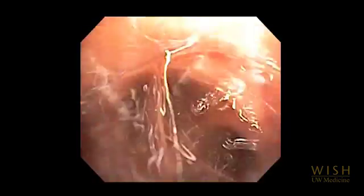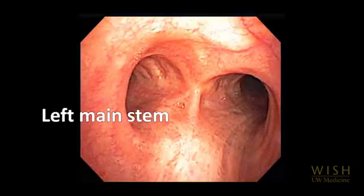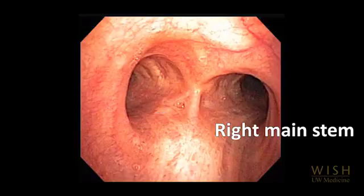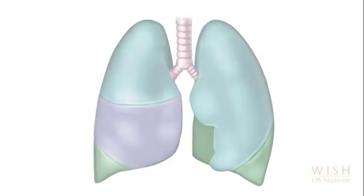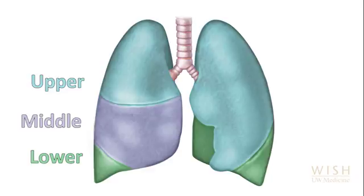Lidocaine is administered at the main carina prior to advancing into the main stem bronchi. The main carina should be sharp. The left main stem typically branches off at a slightly more acute angle than the right main stem. The right lung has three lobes — upper, middle and lower. The left has only two — upper and lower.